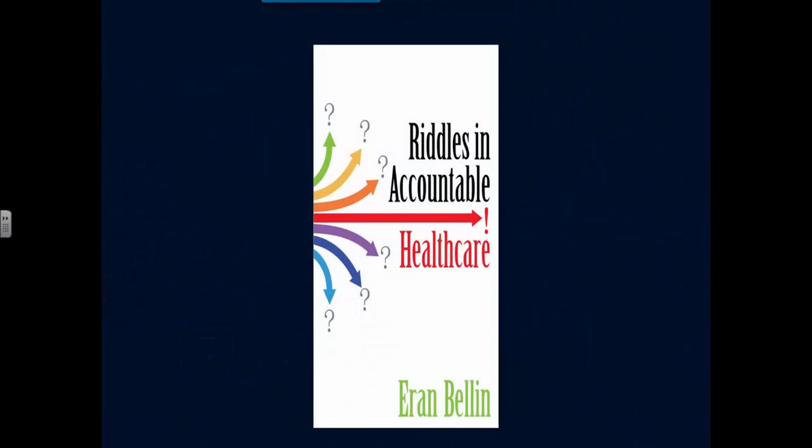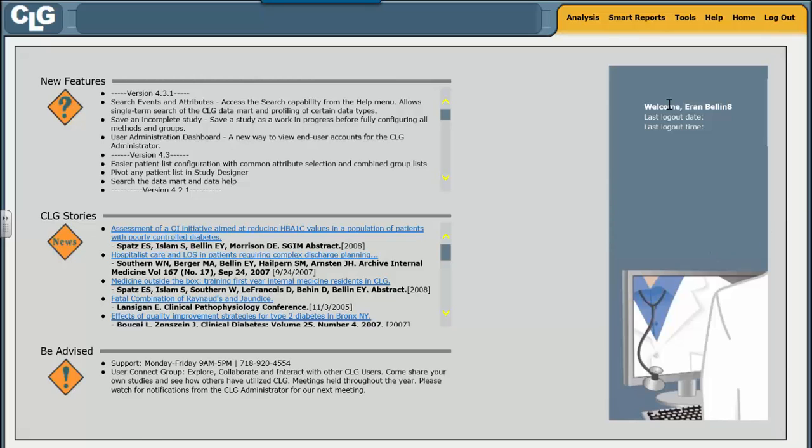For those interested in understanding how to use cohorts to analyze the quality of health care provided, please read Riddles in Accountable Healthcare by Aron Bellin, available through Amazon either as paperback or in Kindle.